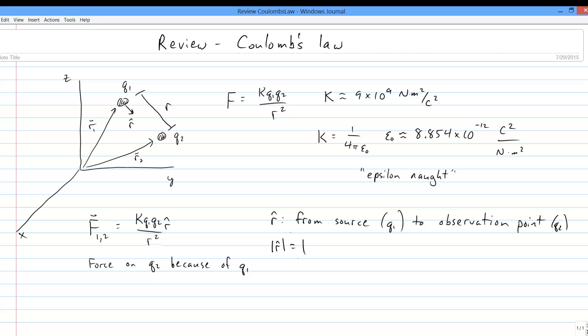So, if we take the displacement vector from charge 1 to charge 2 and name it the r-vector, we can get the r-hat unit vector by dividing it by its own length, as shown.